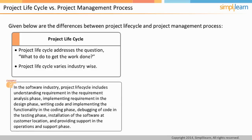First, you understand what is required and analyze it as part of the requirement analysis phase. Then, as part of the design phase, you figure out the implementation and arrive at the approach. Next, you implement the functionality by writing code as part of the coding phase. The code is then verified to ensure it works right as part of the testing phase. The tested and verified software is then installed at the customer locations as part of the installation phase. After the installation, the system then moves into the operations and support phase.